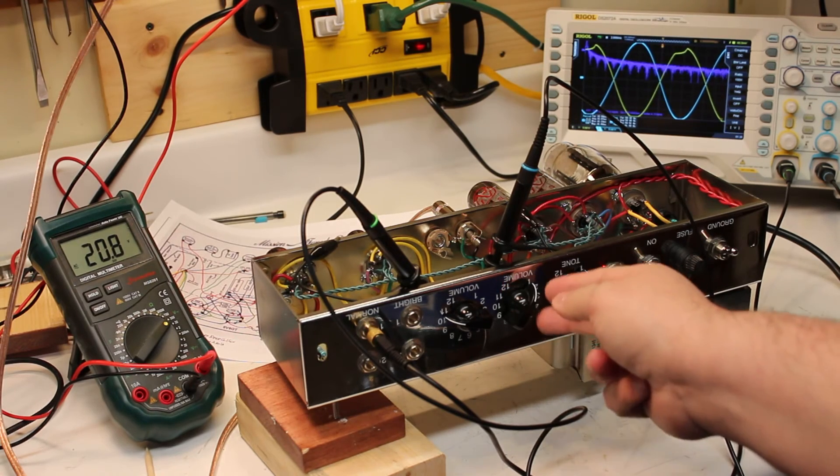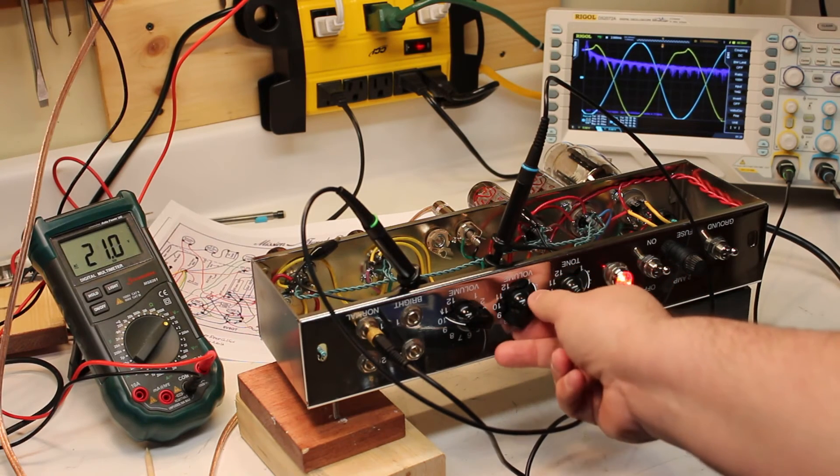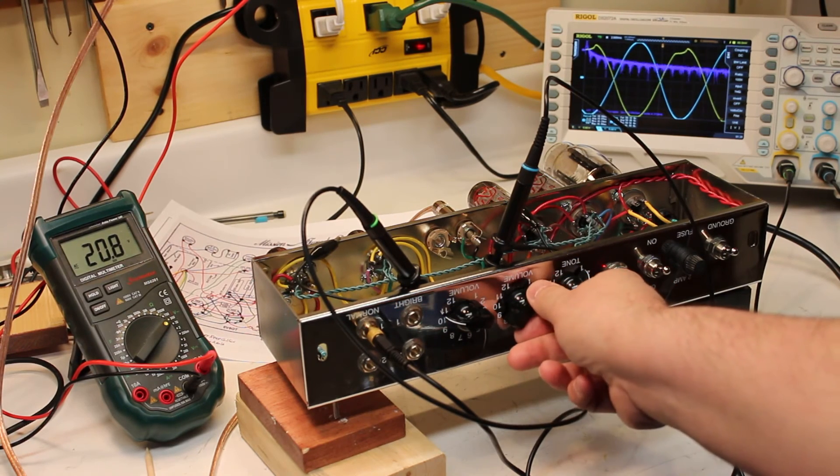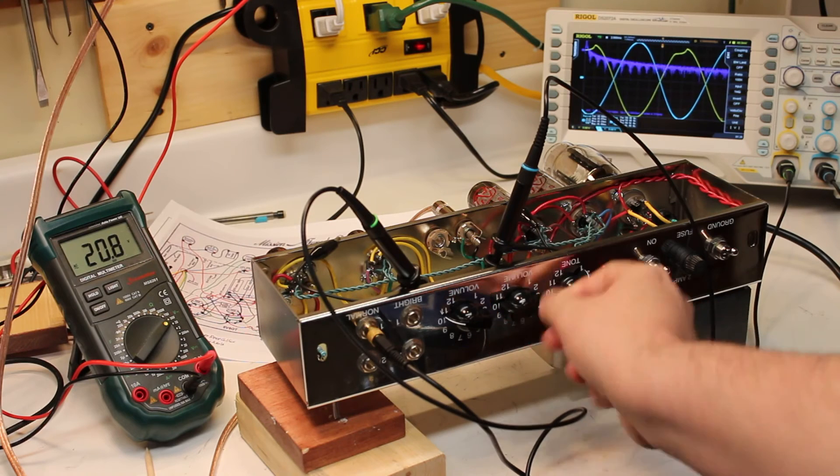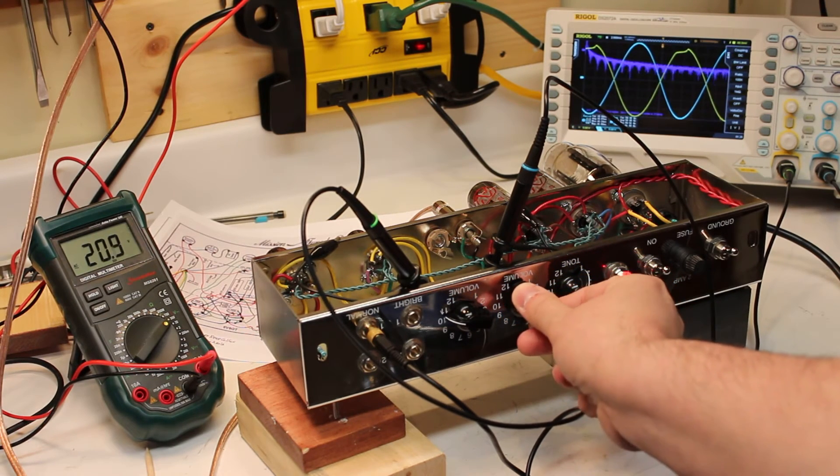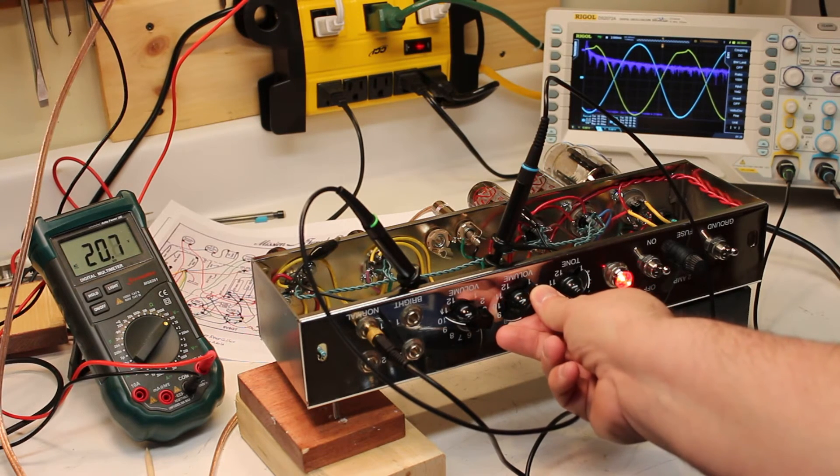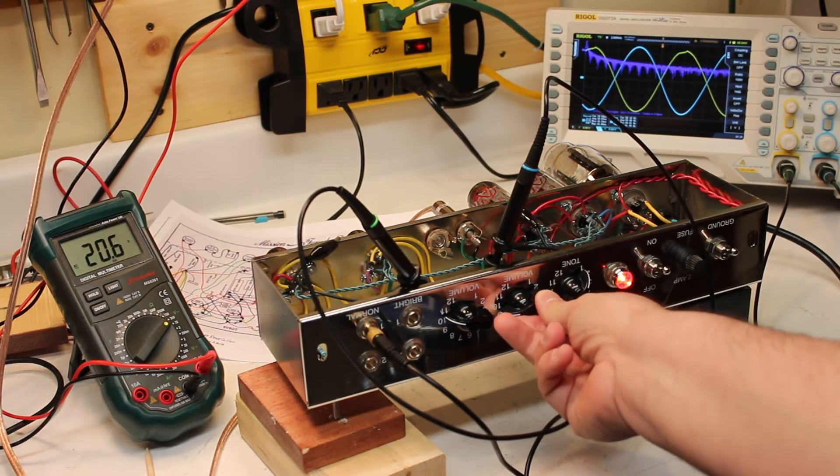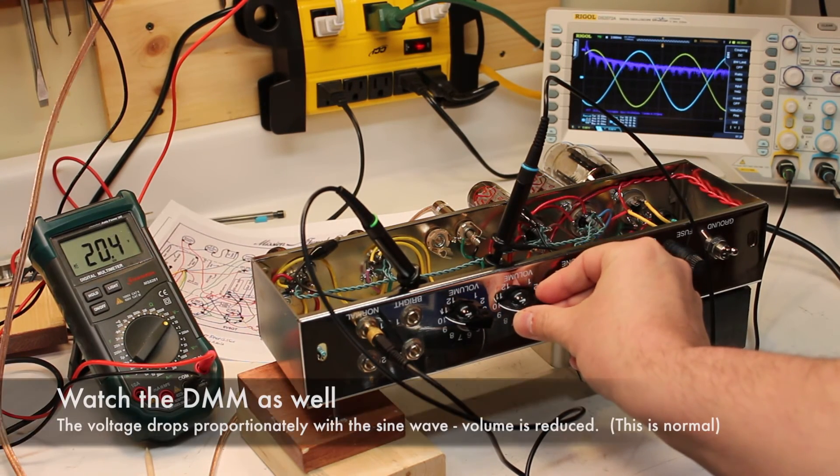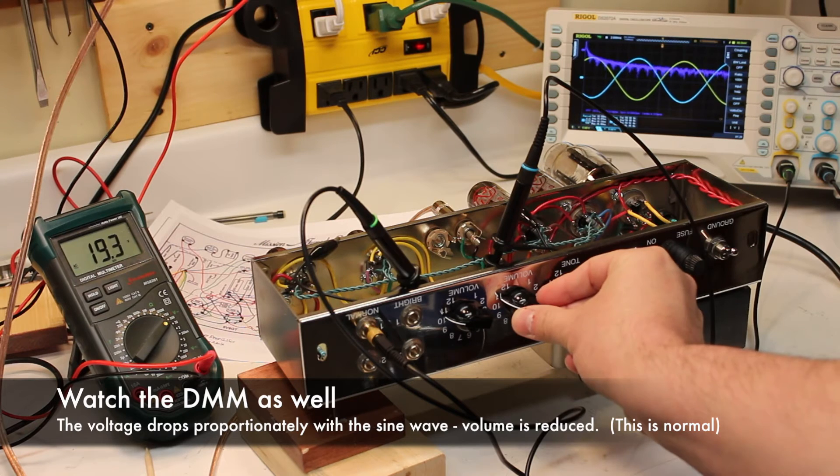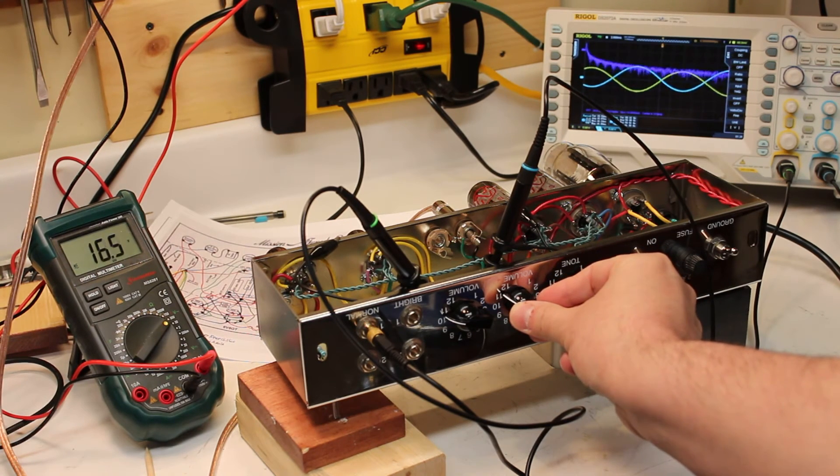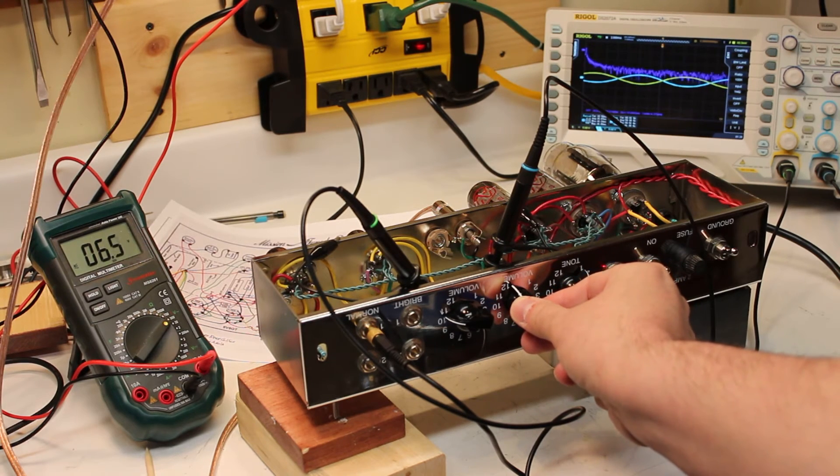So now, what's interesting about the 5E3 is when I start bringing up the volume on the bright channel, as I start getting this up right around to about 10, you can see that I'm actually decreasing the sine wave and the volume on the amp itself, and I'm bringing it way down.